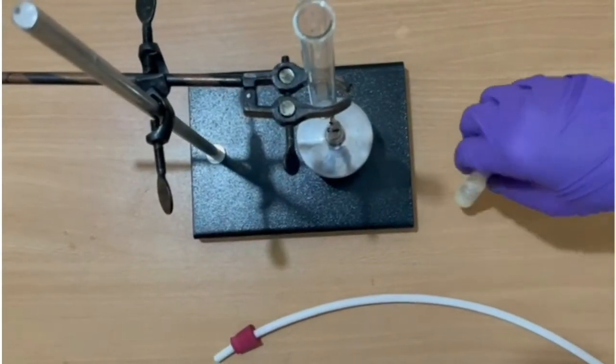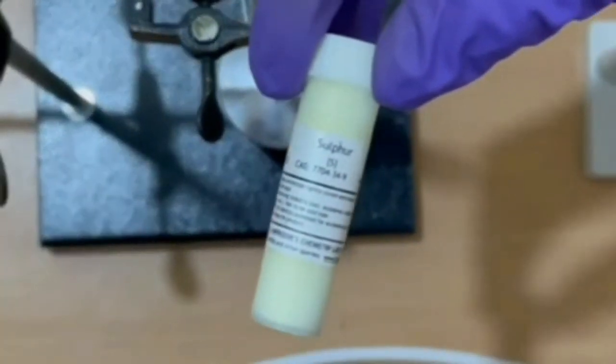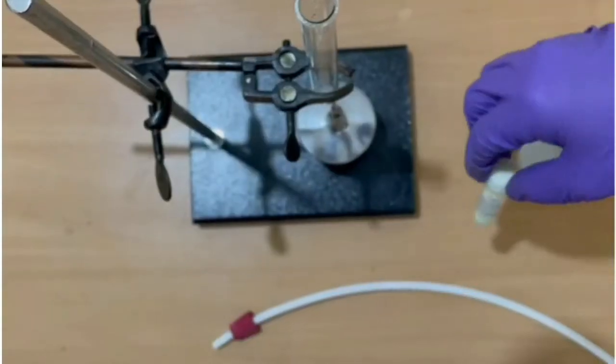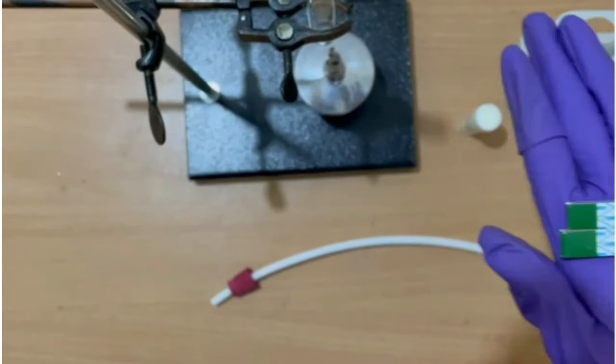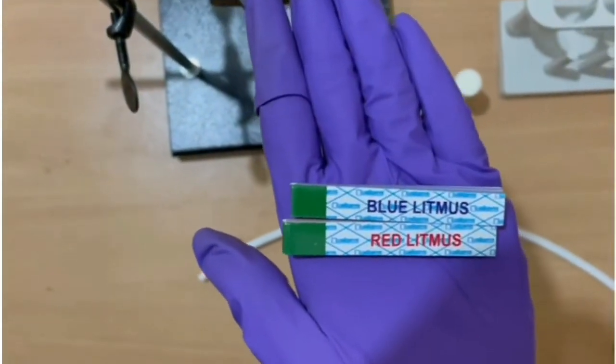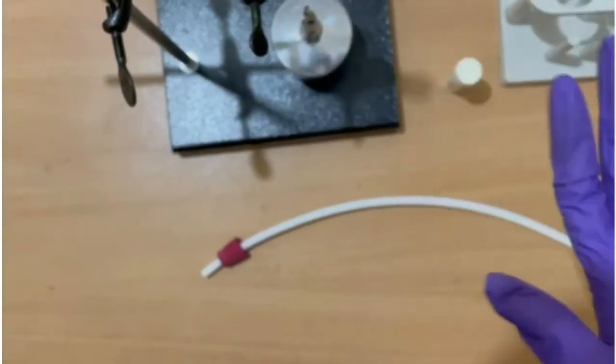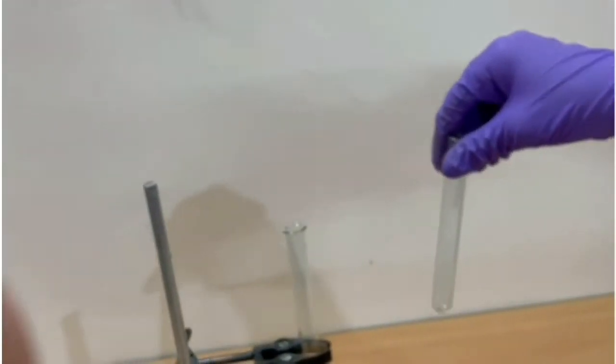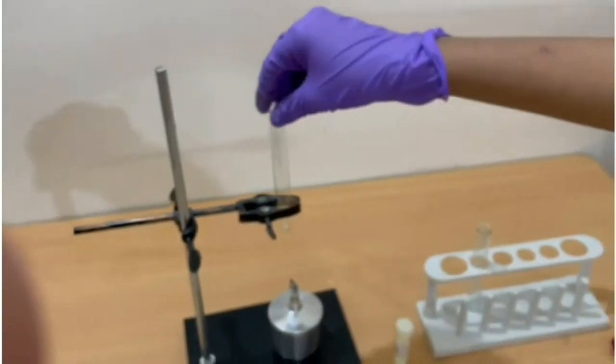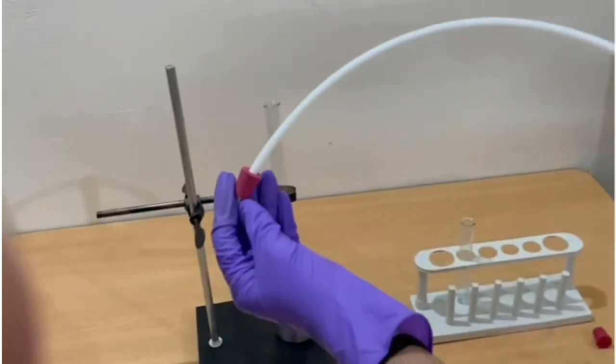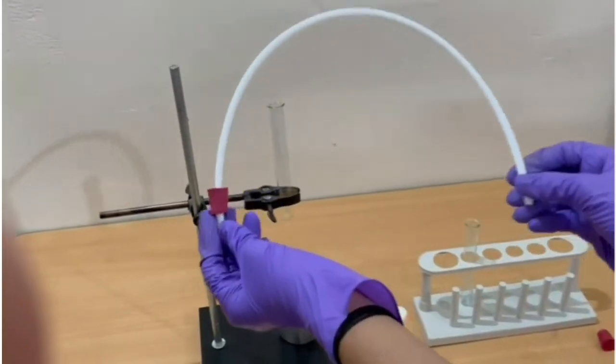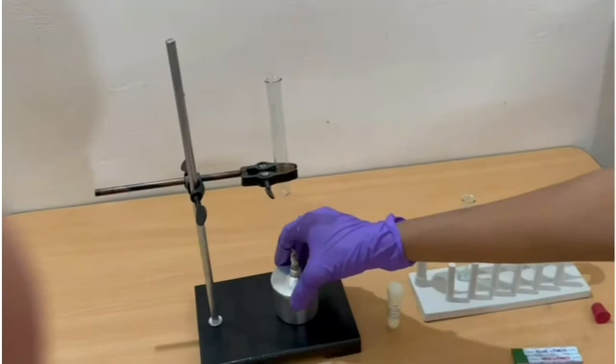For this activity we need sulfur powder, a yellow colored non-metal, red and blue litmus, test tube, cork with rubber tube, and spirit lamp.